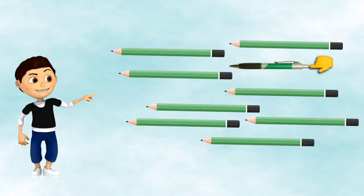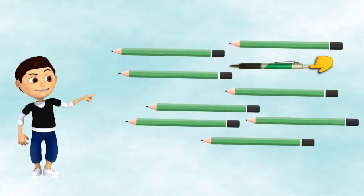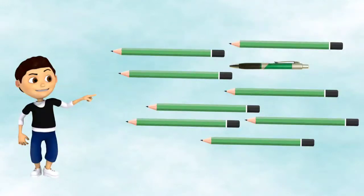Every other object in this collection is a pencil except this particular object. This is a pen, which is different than a pencil, and we are going to cross the object which is different like this.